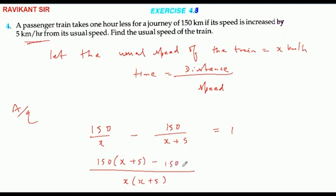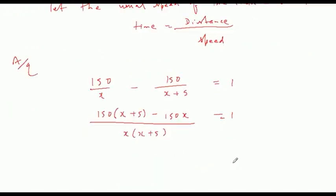So here we can solve this: 150 x plus 750 minus 150 x, this is x square plus 5 x equal to 1. This is multiplied by x square plus 5 x.